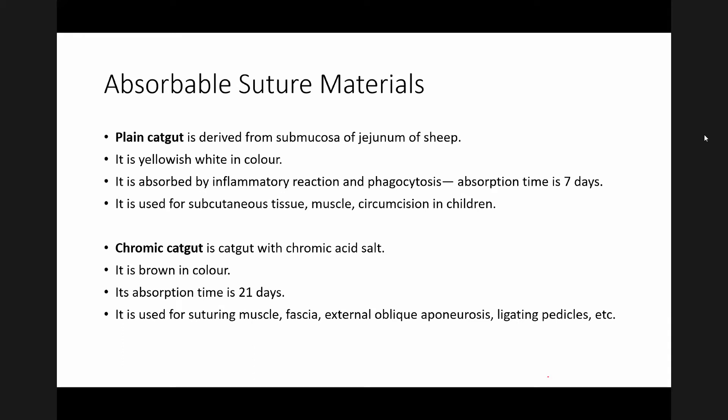We will discuss some commonly used sutures briefly. Among absorbable sutures, plain cat gut and chromic cat gut are absorbable natural ones. Plain cat gut is derived from submucosa of sheep intestine. It is yellow-white in color, absorbed by inflammatory reaction and phagocytosis, with an absorption time of 7 days. It is used for subcutaneous tissue, muscle, and circumcision in children.